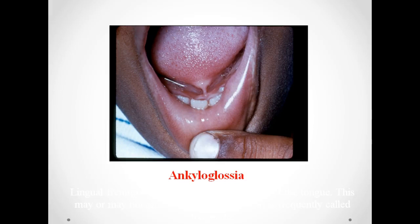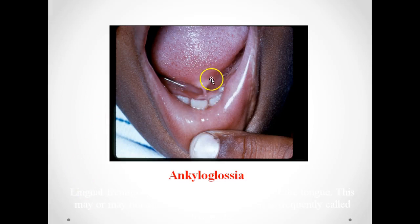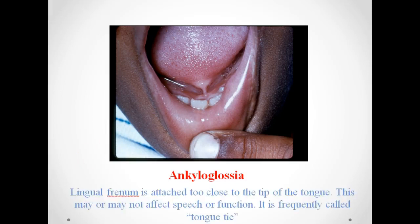This image shows ankyloglossia, where the short frenum attachment is attached close to or at the tip of the tongue, preventing proper movement. It is frequently referred to as tongue tie.